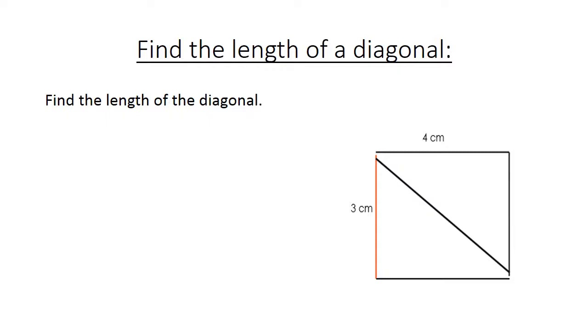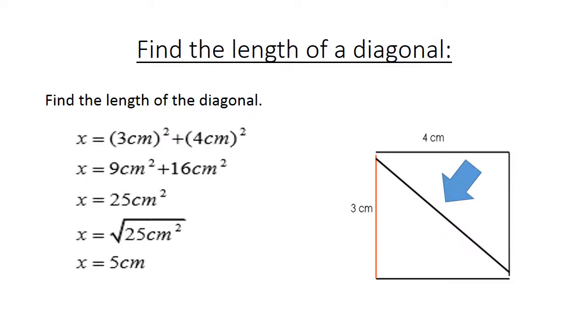Find the length of a diagonal. We have a diagonal here. X equals 3 centimeters squared plus 4 centimeters squared equals 9 centimeters squared plus 16 centimeters squared. X is 25 cm squared. The square root of 25 cm squared is 5 cm.